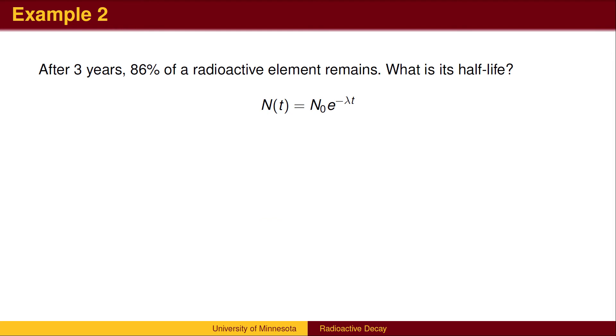Here is a second example. We know the fraction that remained after a given time, and wish to find the half-life. Note that we were not given either the initial amount or the amount that remained. All we were given was the ratio of the two, which is all we need to know. Plugging in t equals 3, we can find the rate of decay, lambda.